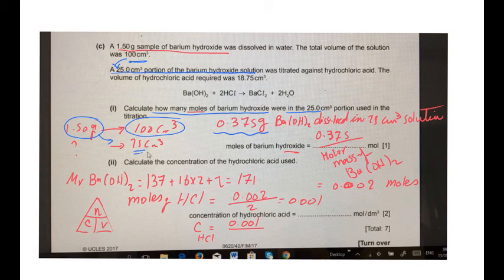And then you are asked about the moles of barium hydroxide. To get the moles, you need to divide the mass divided by the molar mass. Remember this triangle, mass and the molar mass.